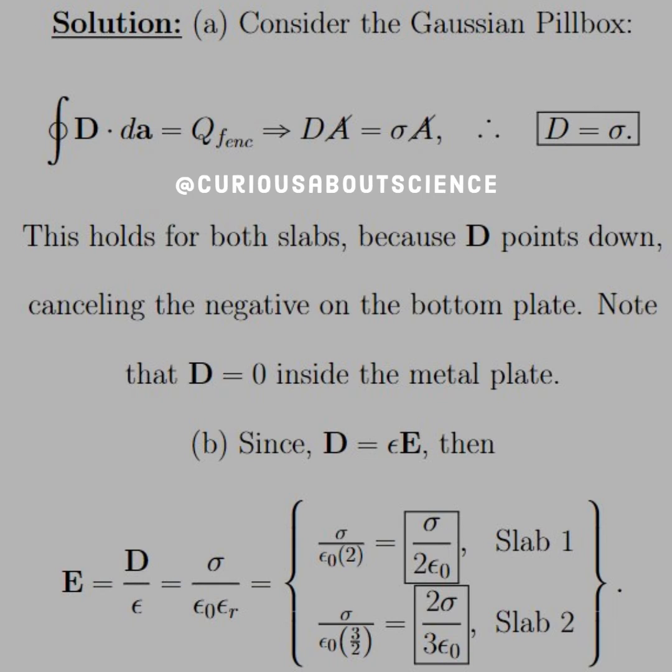All right, and for part B, we know that since D equals the permittivity, epsilon, times the electric field, then we can algebraically solve for the electric field, giving us D over epsilon. But we know that the permittivity from our note page is equal to epsilon naught times epsilon R, which is the relative or the dielectric constant, and that's what was given to us.